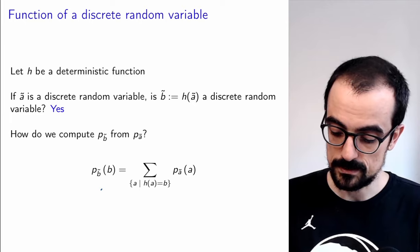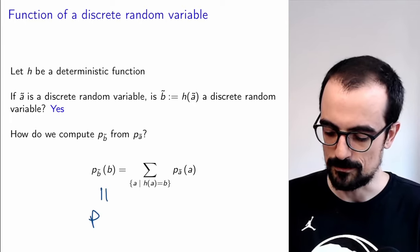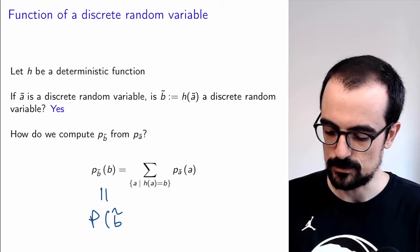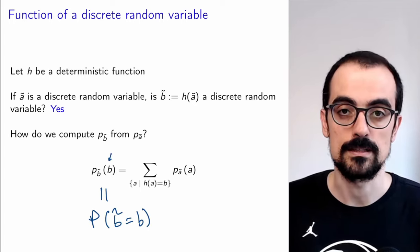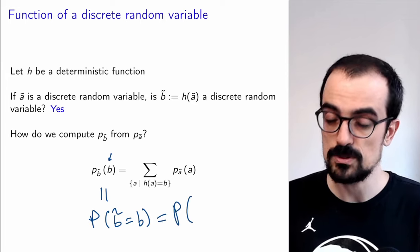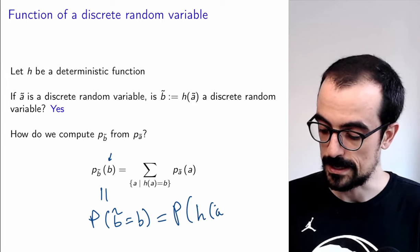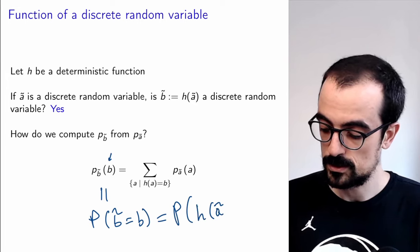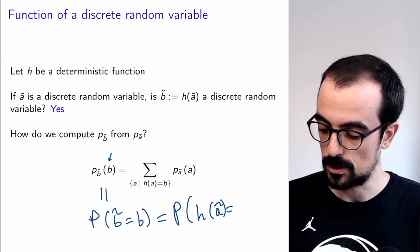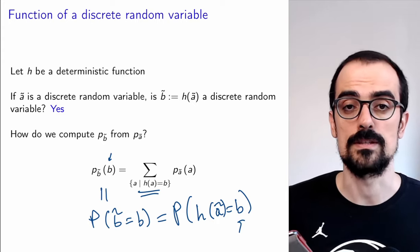What is the PMF of B? It's just the probability that this random variable is equal to this specific value. But we can express that probability in terms of what we already know, which is h of A. So we just need to compute the probability that h of A is equal to this value, which we can do by summing over the relevant values of the PMF.